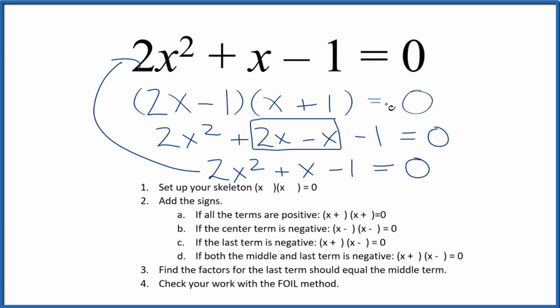This is Dr. B factoring the equation 2x squared plus x minus 1 equals 0. This is your answer. Thanks for watchin'.